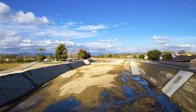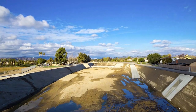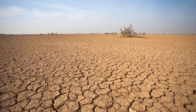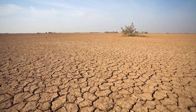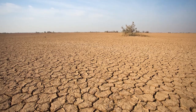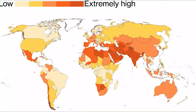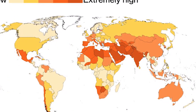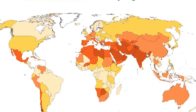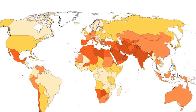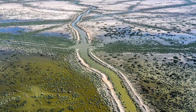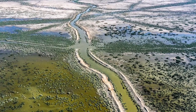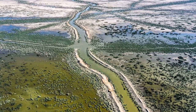Problem 5: Shortage of Fresh Water. Another major problem facing Earth in 2050 is the shortage of fresh water. With increasing demand for water, many regions around the world will experience water scarcity, leading to increased competition for water resources and potentially even water wars.